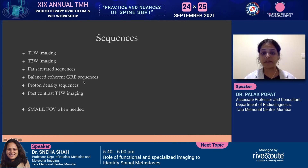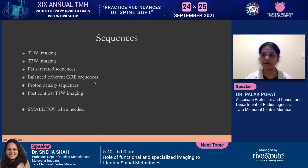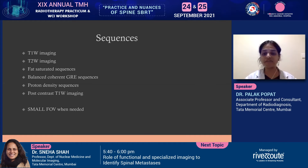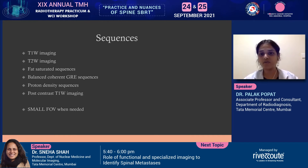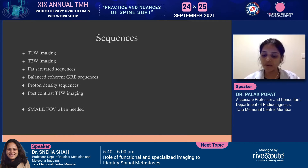Balanced coherent GRE sequences are available for better, finer spatial and temporal resolution. Proton density sequences are quite essential for musculoskeletal imaging but may not be used for spine imaging. Post-contrast T1-weighted imaging is definitely required when looking at indeterminate lesions, or lesions which are not hemangiomas or classical marrow edema in an osteoporotic fracture. For most other situations, it is prudent to go ahead with post-contrast imaging. A small field of view must be taken — when you are looking at something specific, a smaller FOV gives better spatial resolution of the pathology.